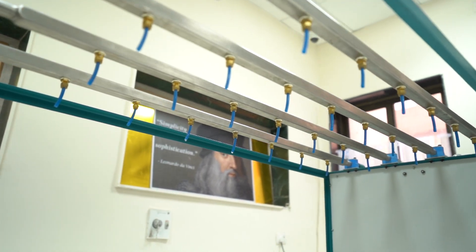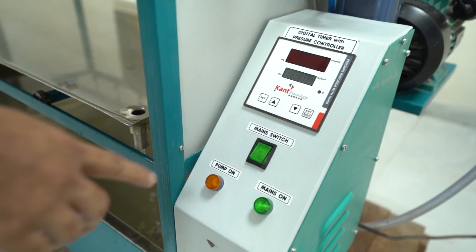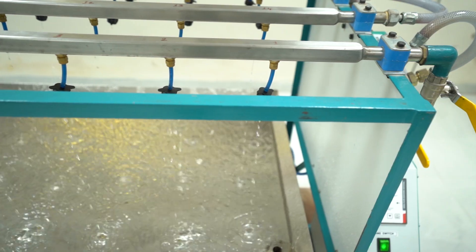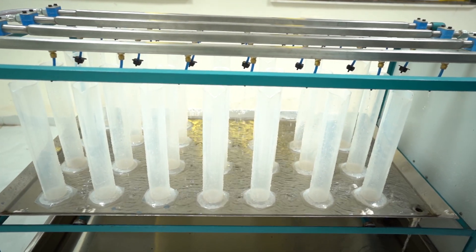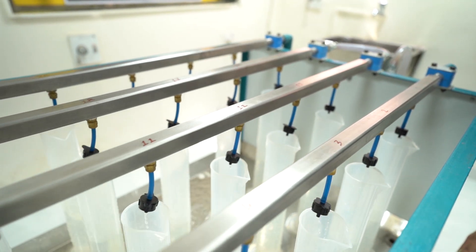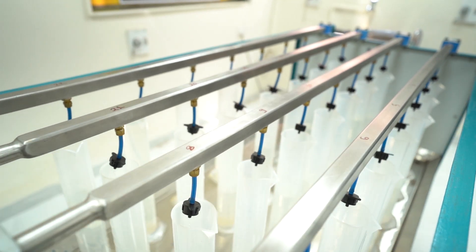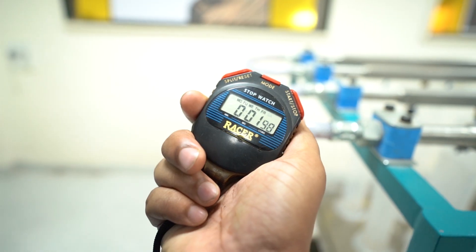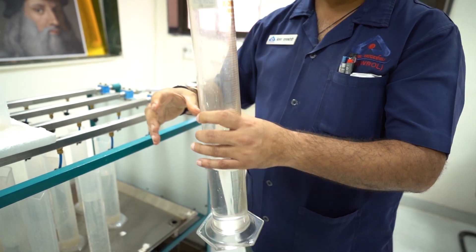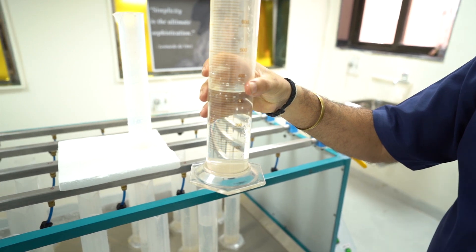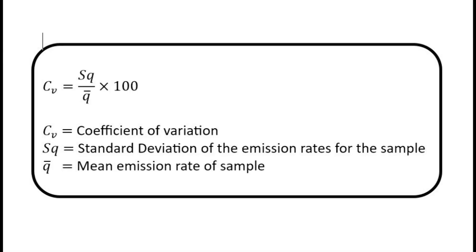For single outlet emitters, we require at least 25 emitters as test samples. We will measure the emission rates of the emitters when the water pressure at the emitter matches the nominal test pressure for 5 minutes, and record the measured emission rate at each emitter outlet separately. To assess the uniformity of emission rates, we will calculate the coefficient of variation, denoted as Cv, using the following formula: Cv is the coefficient of variation, the standard deviation represents the variation in emission rates, and the mean emission rate is the average of all measured rates.